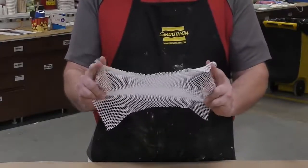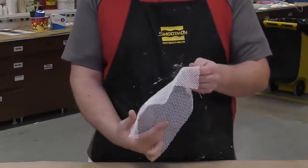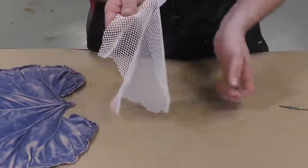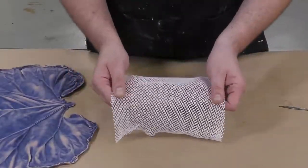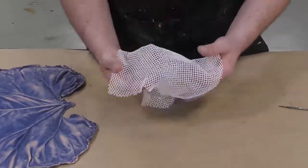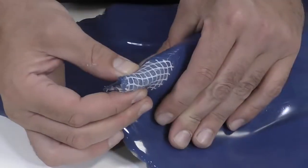This cloth that we are using is a wide cell structure active reinforcement cloth, and what that means is that the holes in the cloth are large and the cloth can stretch in all directions equally. A stretchy reinforcement cloth will be able to bend and stretch like the rest of the mold.